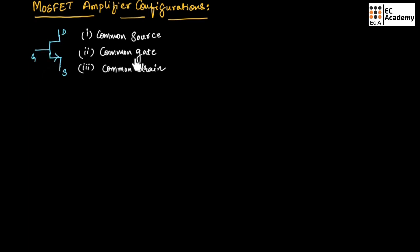In common gate configuration, the gate will be common between input and output, which means the gate terminal is connected to ground and the other two terminals will act as input terminal as well as output terminal. In common drain configuration, drain will be common between input and output, and the other two terminals will act as input side and output side.